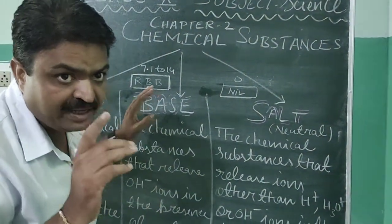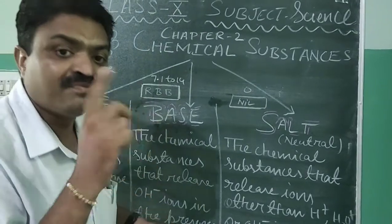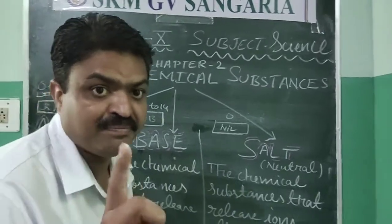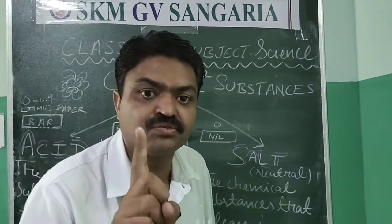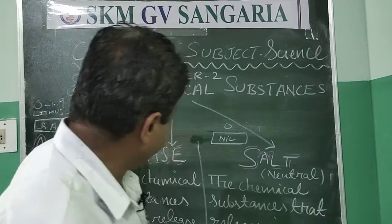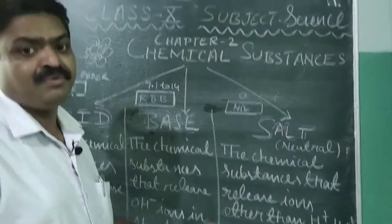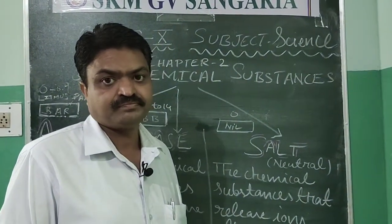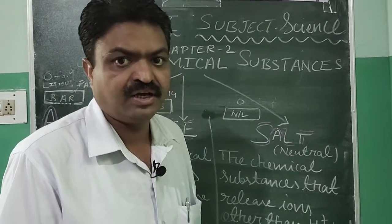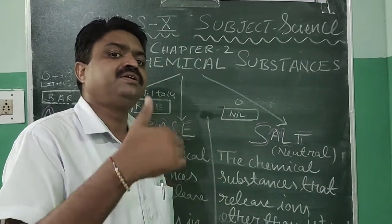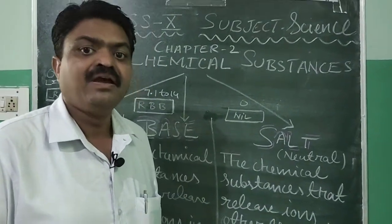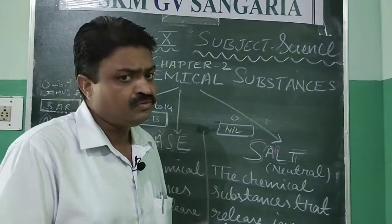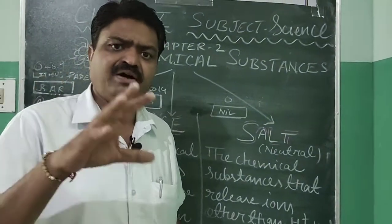If a base is found in water or in aqueous form, then that particular base is known as alkali. In the laboratory we have different types of bases like sodium hydroxide, potassium hydroxide, NaHCO3 known as baking soda, and Na2CO3·10H2O known as washing soda.